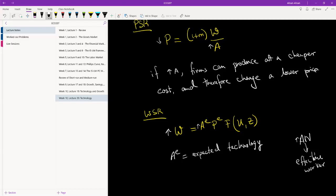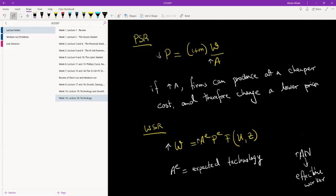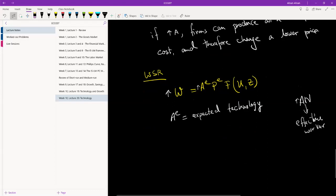So we have a modified price setting relation and wage setting relation, where we've just effectively added technology in each of them. And if we play around with them, what we get is W/P is A divided by 1 plus M. And we get W/P is equal to a function of U and Z. Of course, we can put our expectation here. It doesn't really make a difference.